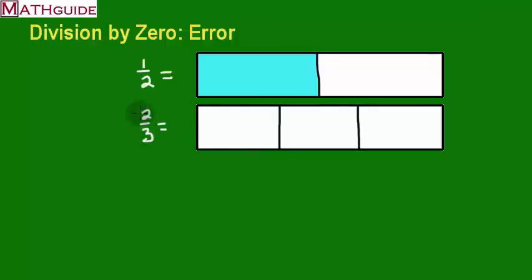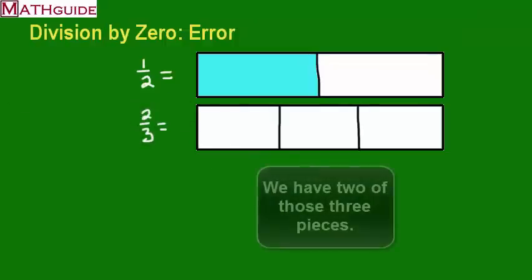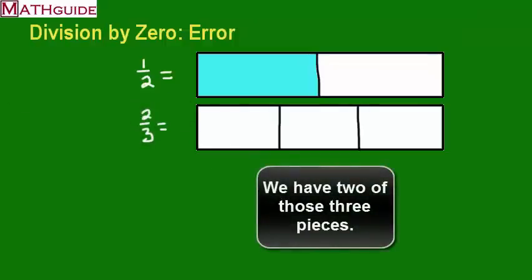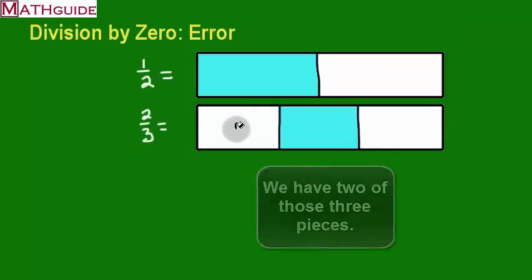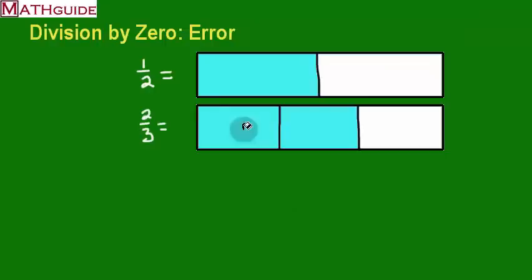And the top number says how many of those parts we have. So I'm going to shade two of them. If this thing were to work, there we go.